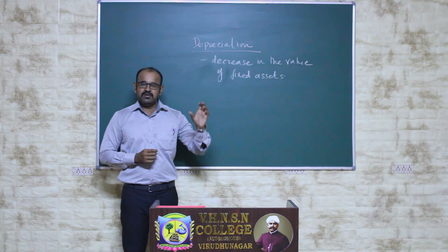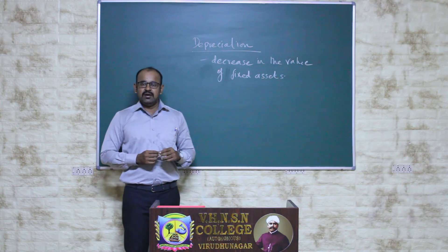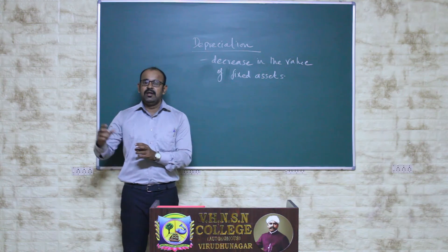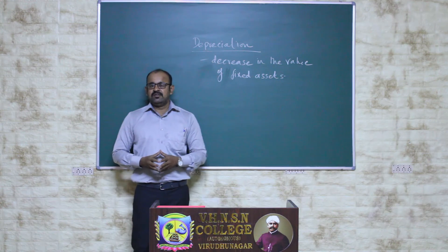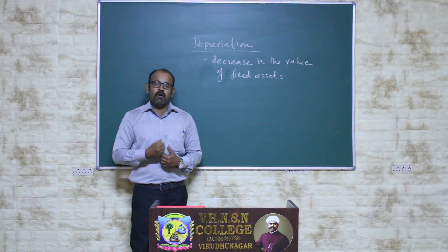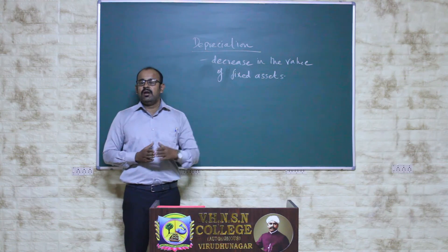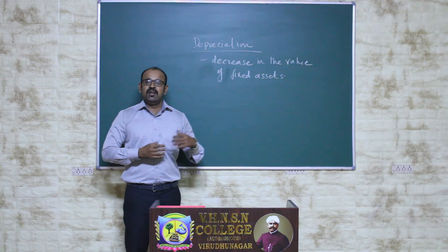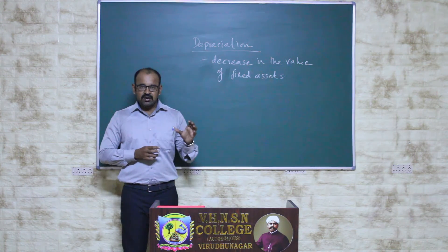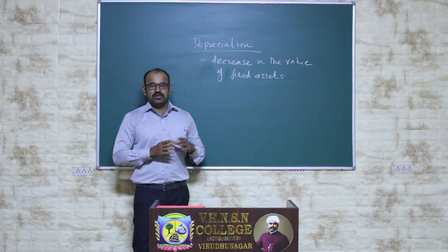So these are all the reasons: wear and tear, obsolescence, lapse of time, expiry date, outdated technology, and depletion of assets — meaning natural resource assets get depreciated when the resource runs out. For example, if you are digging to extract oil, there will eventually be an end point for that asset. These are all the main reasons a fixed asset gets depreciated.